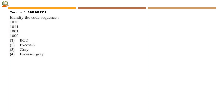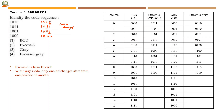Next question: identify the code sequence. Four options are given — BCD, XS3, XS3 Gray, and Gray code. Looking at the sequence: 1010, one bit changes to 1011, then to 1001, then to 1000, then to 0000 — only one bit is getting changed at each step.